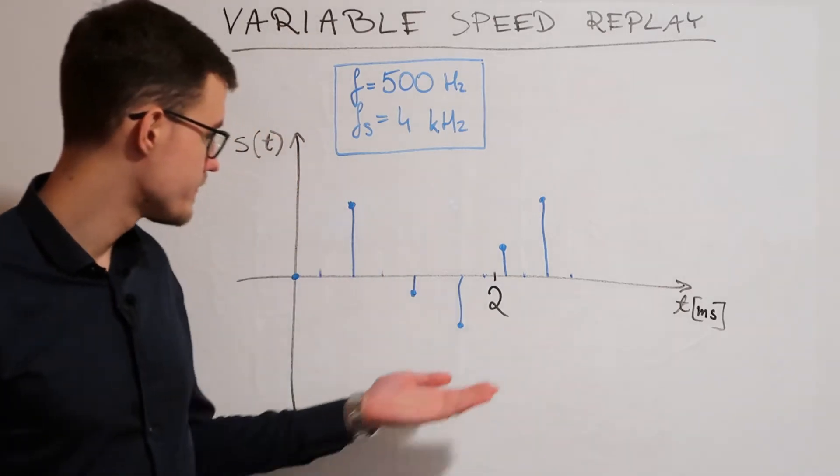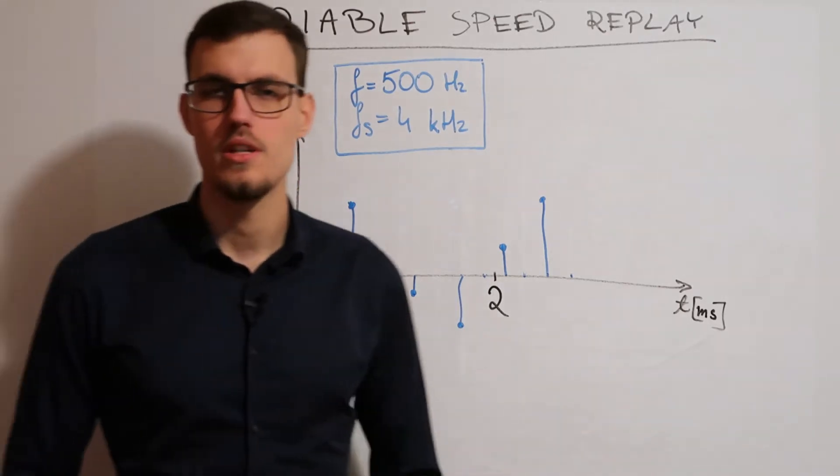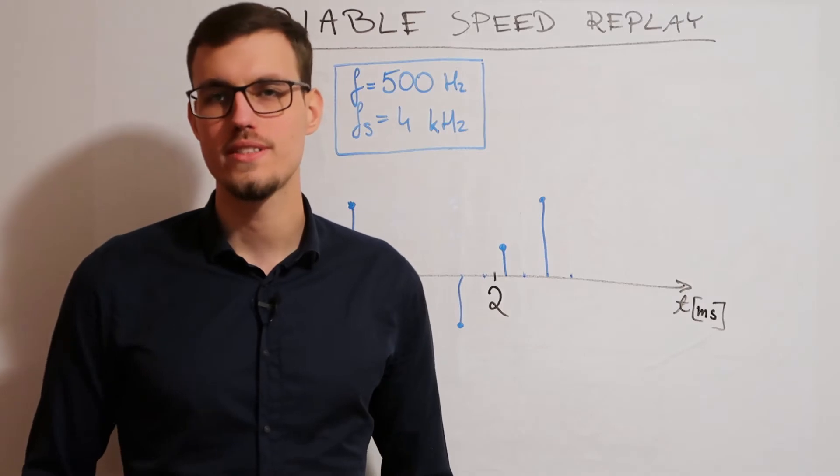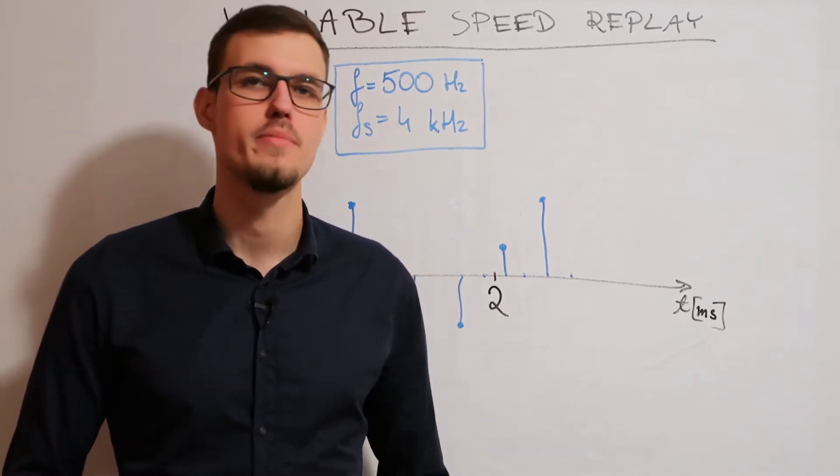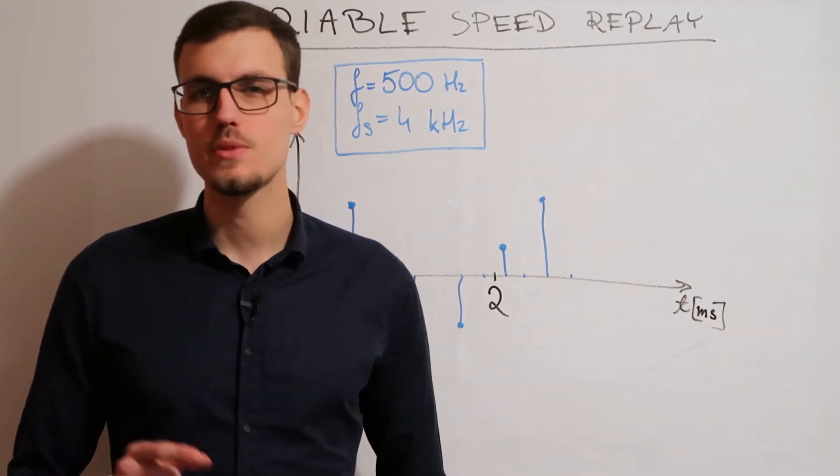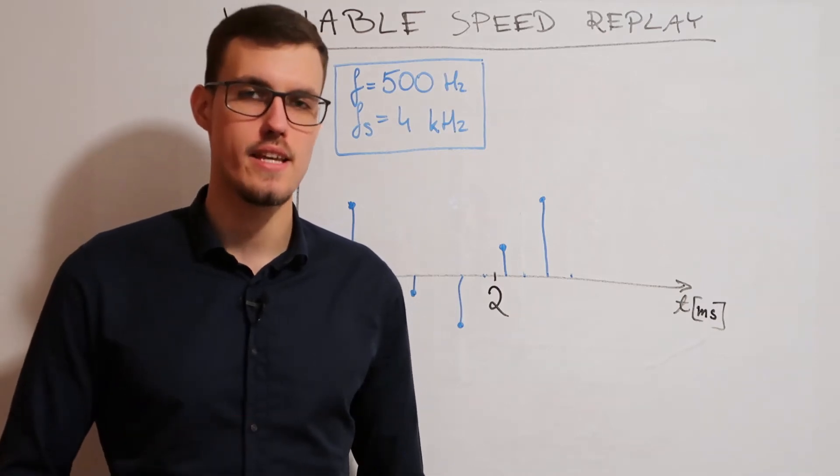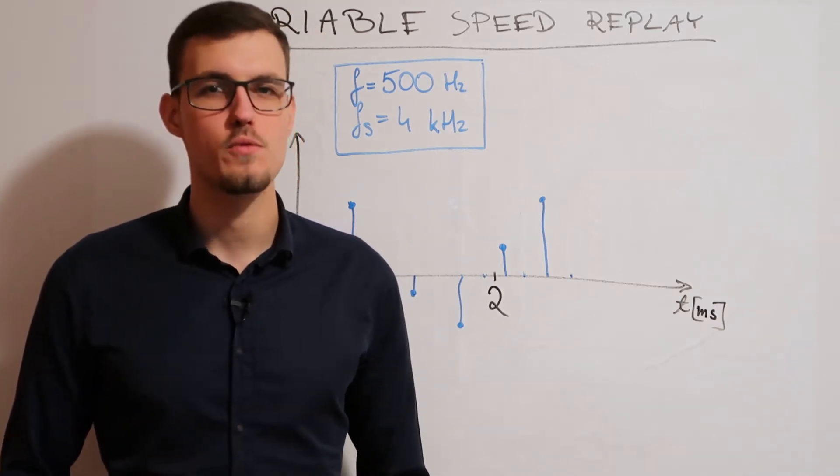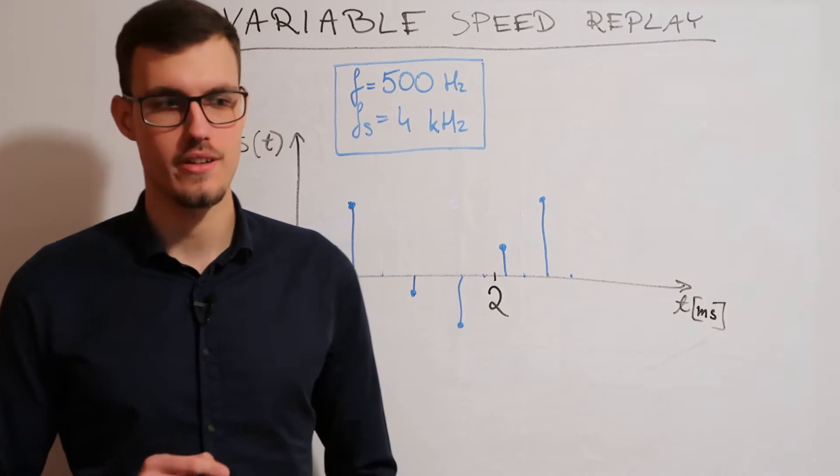As you can see, we now only have 4 samples per signal's period. But the output sample rate stayed the same, which means that we effectively shortened our signal.